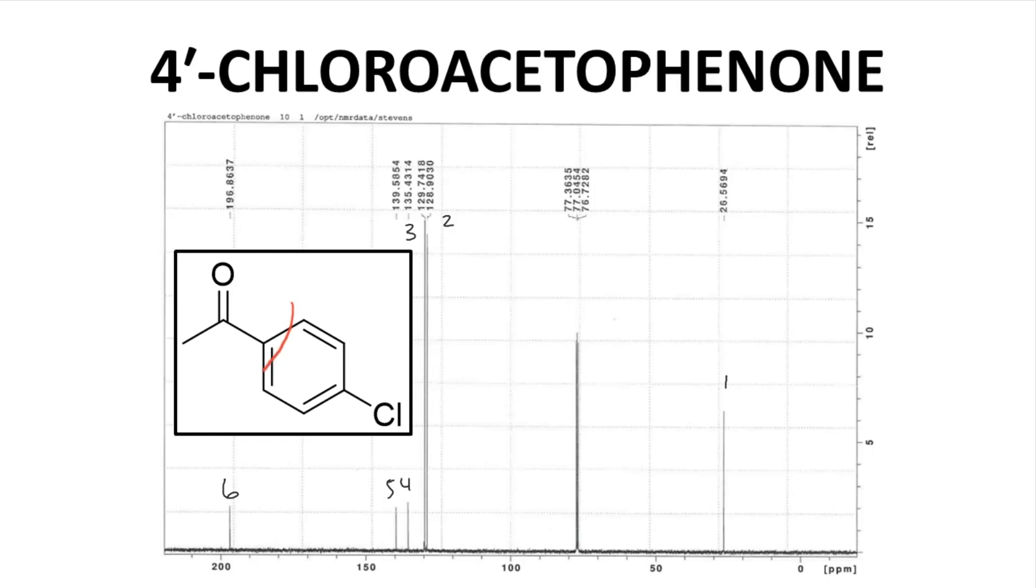By symmetry, these two carbons on the ring will give a single overlapping signal. The same is true for these two carbons. All the carbons appear in the spectrum, but some signals overlap.